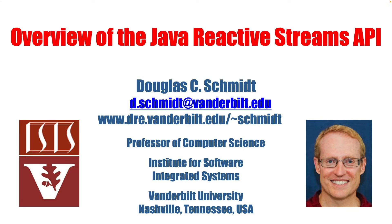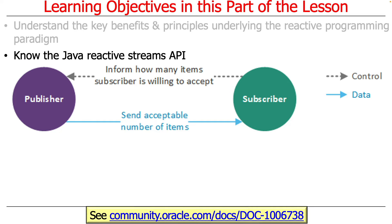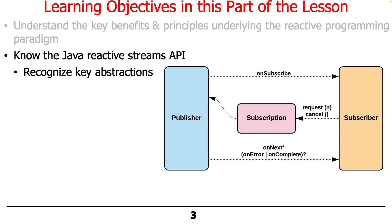Now that you know a little bit about what reactive programming is as a paradigm, let's talk about the reactive streams API. This has an interesting history and is a nice continuation from the parallel streams and completable futures stuff we talked about before, into newer versions of modern Java, and then continuing on to frameworks that implement these abstractions.